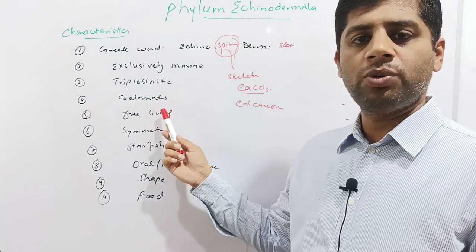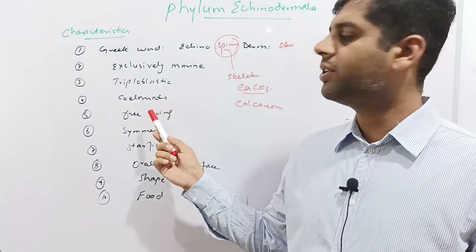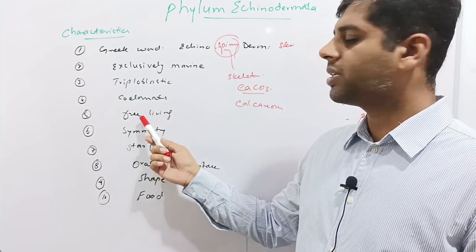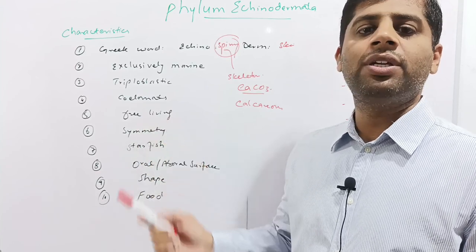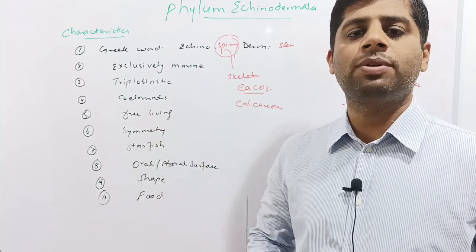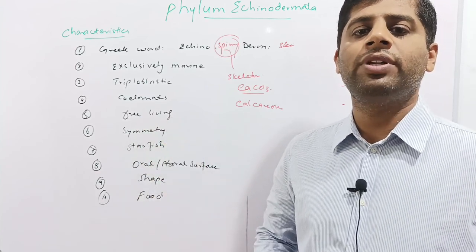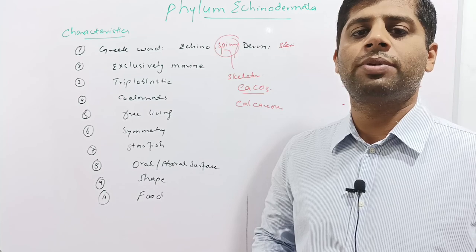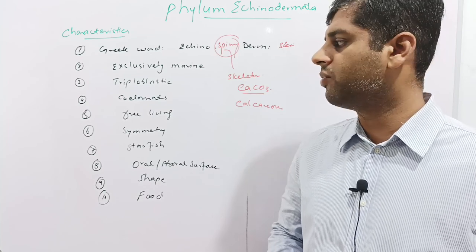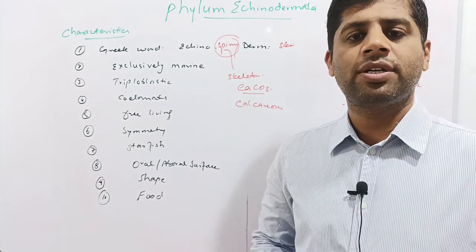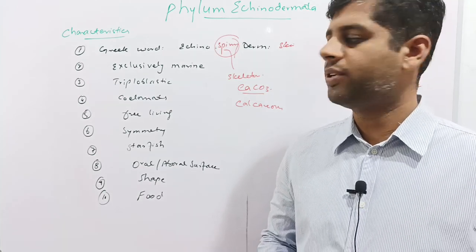These are coelomates — true coelomates having a body cavity or free space in the body. These are all free living; there is no parasitic member in the Echinoderms. All live freely in the marine environment, feeding on crustaceans and small fish larvae.